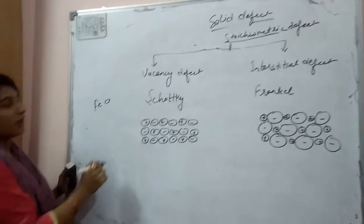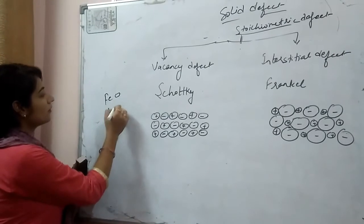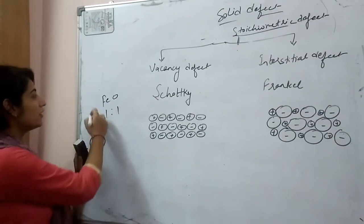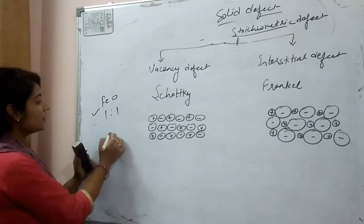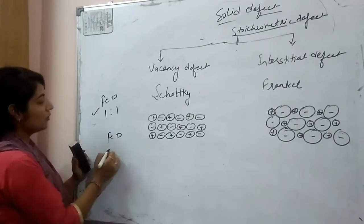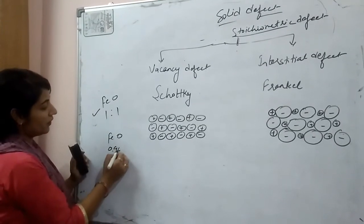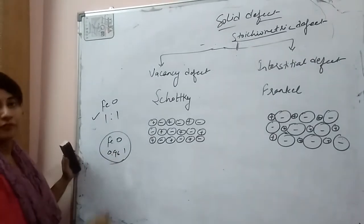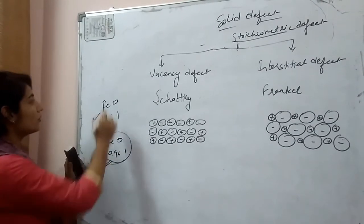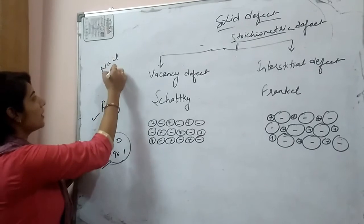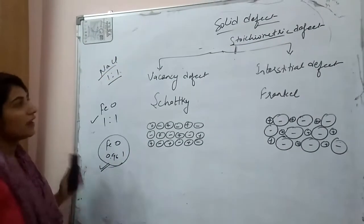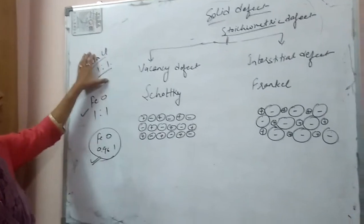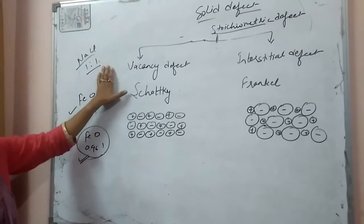For example, if we write FeO here and the ratio comes out to one-to-one, then it is stoichiometric. But generally we see that the ratio is less than one for iron, in which case it will become a non-stoichiometric compound. For a stoichiometric compound we can take one-to-one for any NaCl, and when there is a solid defect it also comes out as one-to-one.